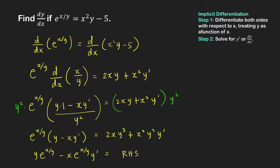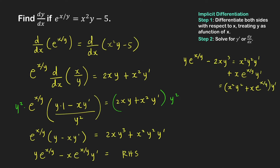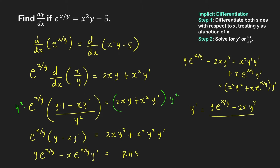Next, we isolate all terms with y prime on the right-hand side. We get y e raised to x over y minus 2xy cubed, equal to x squared y squared y prime plus x e raised to x over y times y prime. Factoring the common factor y prime gives x squared y squared plus x e raised to x over y, times y prime. Finally, dividing both sides by this coefficient of y prime, we get y prime equal to y e raised to x over y minus 2xy cubed, all over x squared y squared plus x e raised to x over y. This is the derivative of y with respect to x.